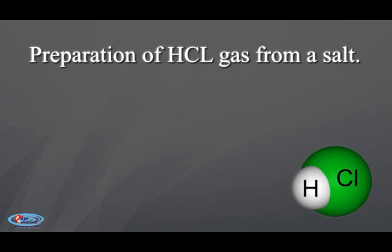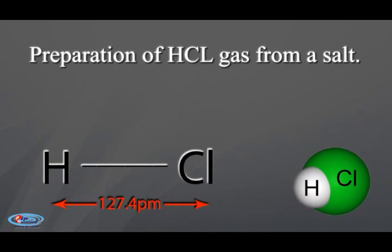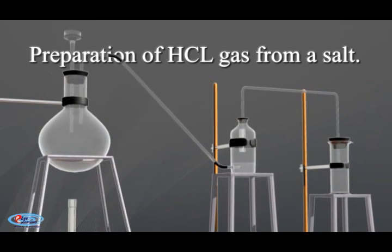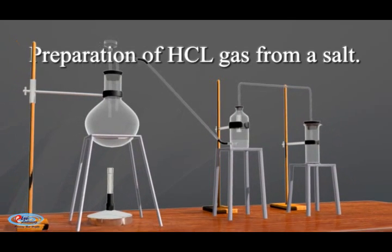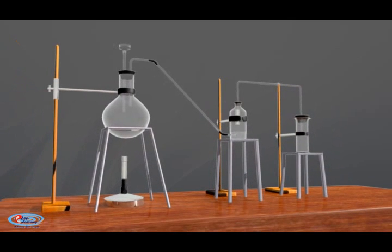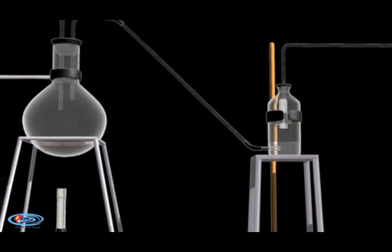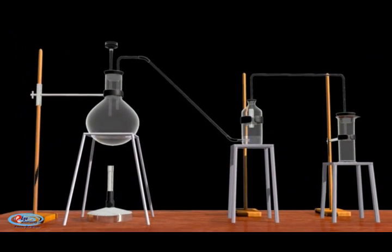The dot diagram or Lewis structure and orbital diagram of HCl molecule in animation. In laboratory, hydrogen chloride gas can be prepared by reaction of concentrated sulfuric acid on sodium chloride.